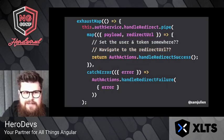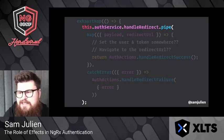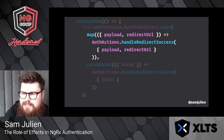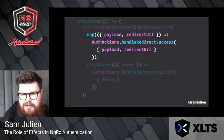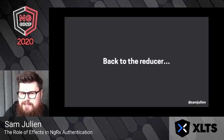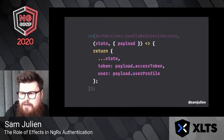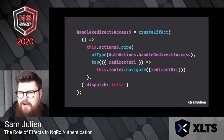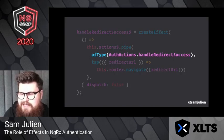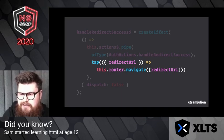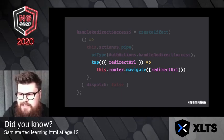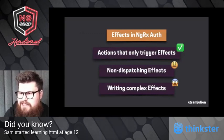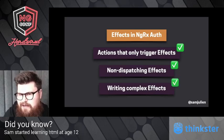When we go back to our effect, we know we need to handle the redirect by calling the auth service — and that's already a side effect. So instead of trying to do everything in one effect, we refactor: we dispatch a success action and pass along the payload with the user, token, and redirect URL. This lets us go back to the reducer and add a case for handleRedirectSuccess to update the token and user profile. Then we create a second effect that listens for the handleRedirectSuccess action, uses the tap operator to navigate the user to the redirect URL, and sets dispatch to false since we're not returning a new action.